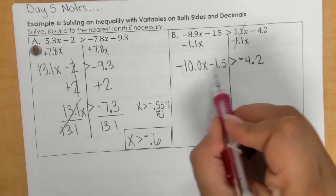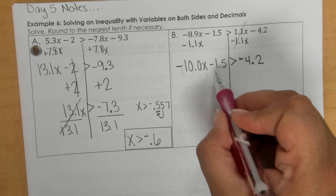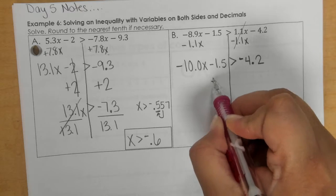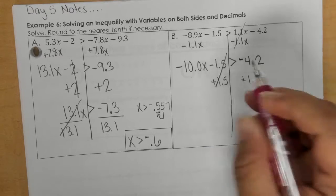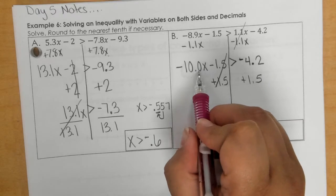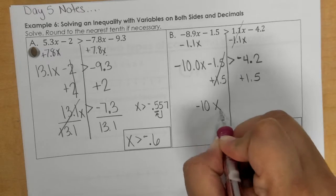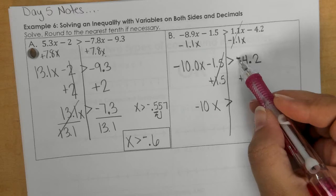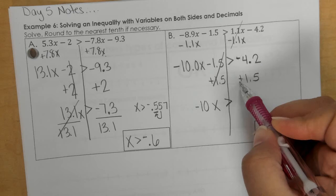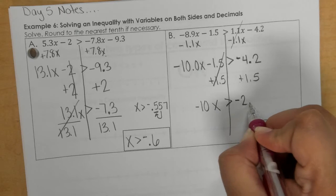Now, we have a two-step. So first step, add or subtract something, because these are like terms. And then when I rewrite this, I don't need the 0.0, this is just negative 10. And then we are really subtracting these, because this is a negative, this is a positive. So when I combine these together, I get negative 2.7.